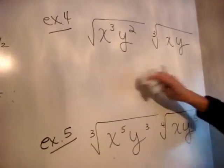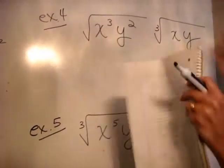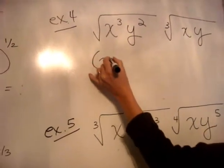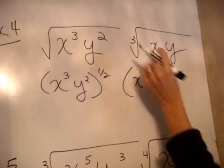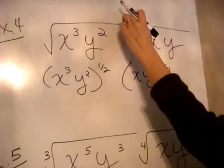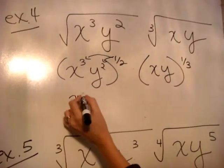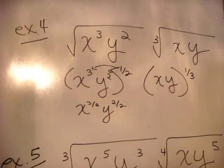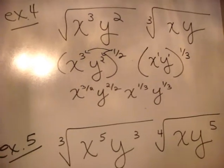Let's move up here and make some space. This time we have a radical times a radical and we need to simplify it. Since this is the square root and this is the cube root, we can't just combine them under one root — they're not the same. So we have to use fractional exponents. It would be x cubed, y squared, all to the one-half power, times x, y to the one-third power. Whatever's on the index goes on the bottom; there are no powers outside so it's just one. Now we distribute using the power-to-power rule and multiply, getting x to the three-halves, y to the two-halves, times x to the one-third, y to the one-third.